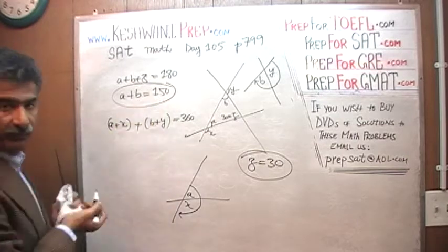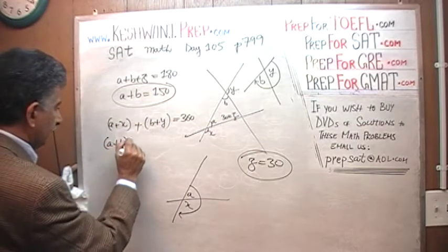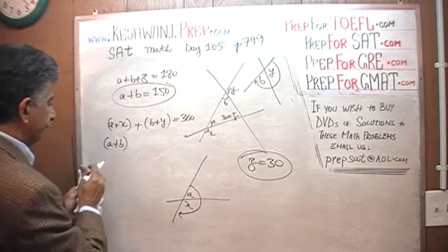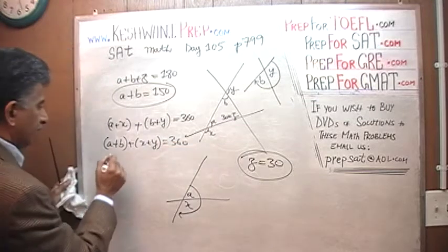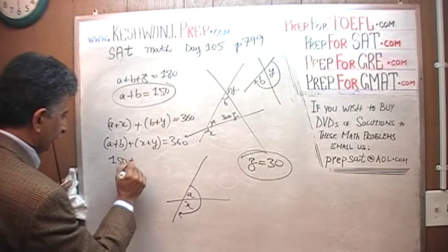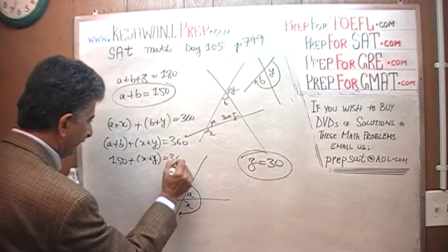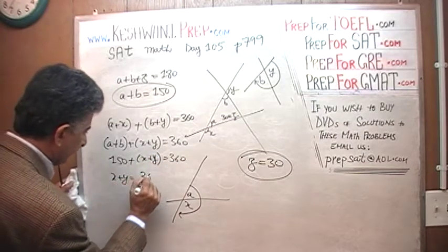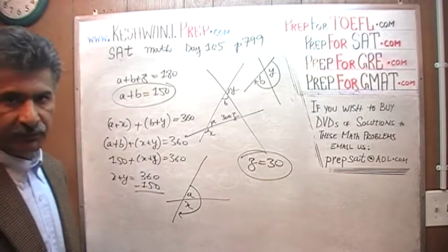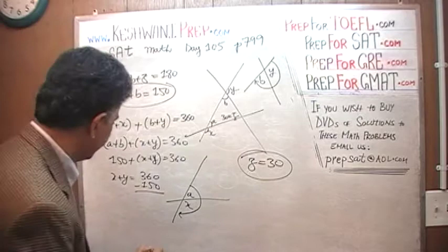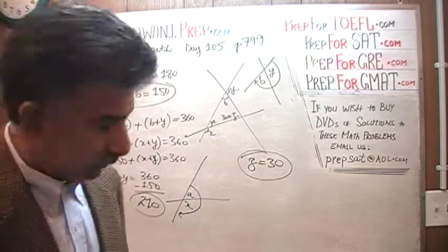We know that A plus B is 150, plus X plus Y equals 360. So 150 plus X plus Y is 360. 360 minus 150 is 210. X plus Y is 210, that's our answer. The answer is D.